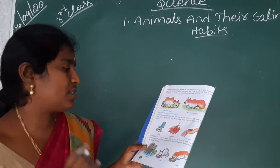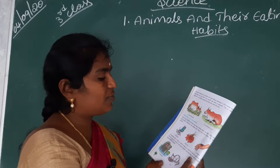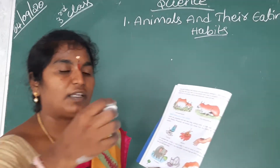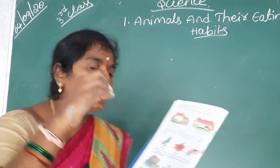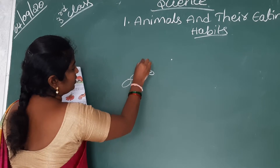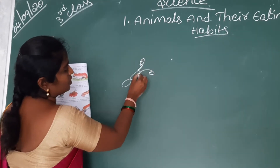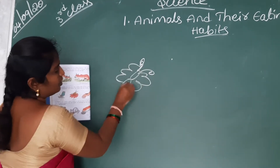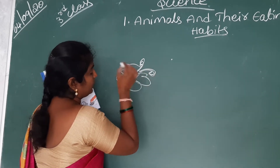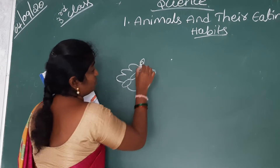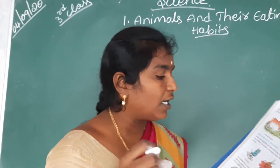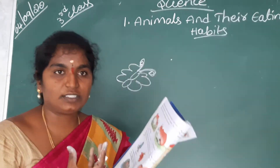Insects like butterflies and bees have a long sucking tube. For example, if you catch a butterfly and observe it, you will see two tubes. By using these two tubes, the butterfly sucks the sweetness of a flower.